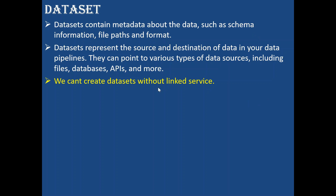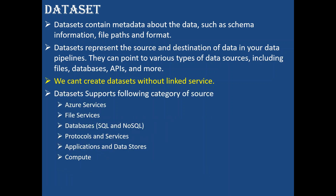We can't create datasets without a linked service. In order to read any data, you first need to verify that you have a proper connection — that you've provided all the details correctly — using the linked service. Once you have a proper linked service for the connection, using that linked service we can read the data and define the location of the file, the file schema, the table schema, or what type of file we want to read. All those things we select in the dataset.